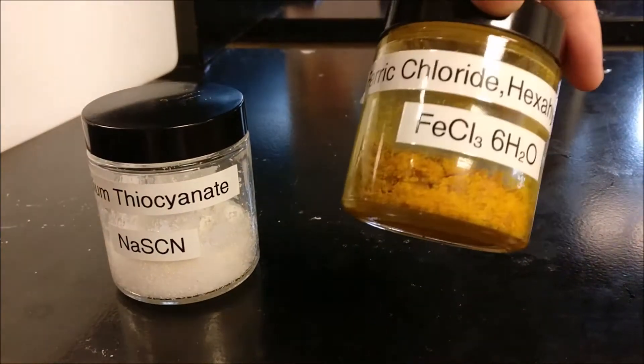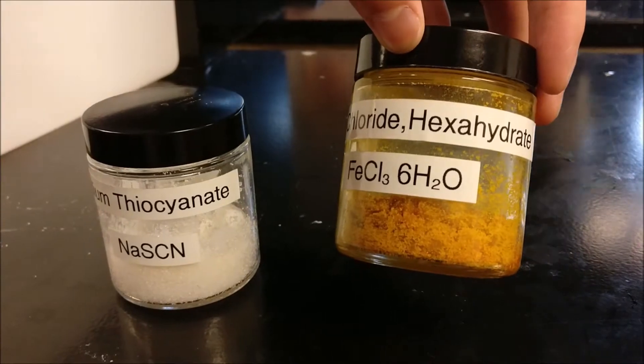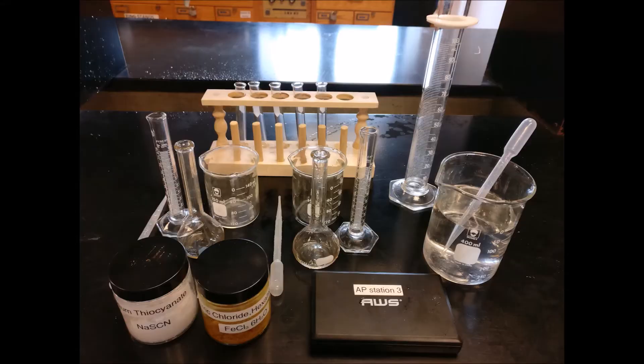We need sodium thiocyanate and iron-3-chloride hexahydrate, an electronic scale, two 50 ml volumetric flasks, two 10 ml graduated cylinders, and one 100 ml graduated cylinder.